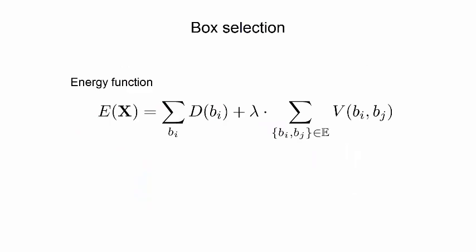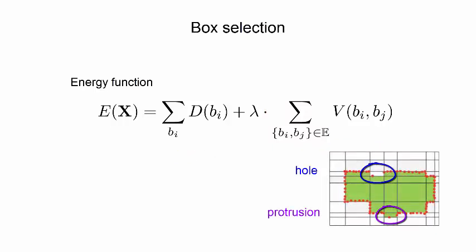Our energy function consists of two terms. The data term measures how well a candidate box BI is supported by the point samples, and the smoothness term measures the compactness of the final model. In other words, it penalizes holes and protrusions.